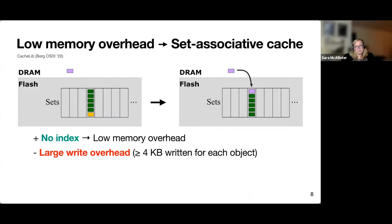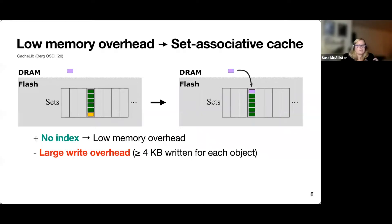Because of this, you might want to optimize for low memory overhead, and one way to do this is using a set-associative cache, similar to a processor cache. To do a set-associative cache, you hash an object's key to find what set it lives in on flash, read that set off flash — at minimum one page — insert the new object potentially evicting old objects, and then rewrite the entire set to flash. The advantage is you don't need an index, leading to low memory overhead. The downside is a large write overhead: you must write four kilobytes for any new object inserted, which adds up and impacts device lifetime.